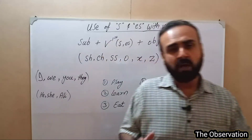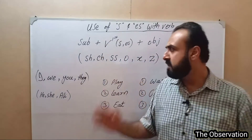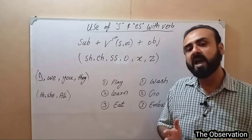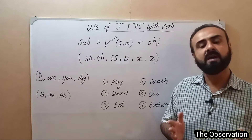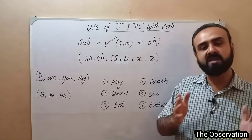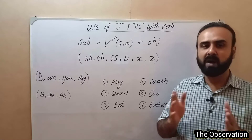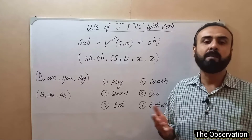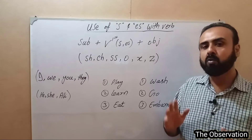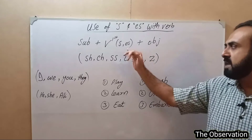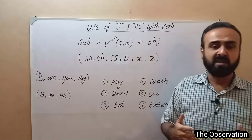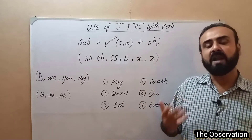You can see the formula for present simple tense, which is easy to use. The verb's first form or base form takes S or ES when the third person singular is used, followed by the object.